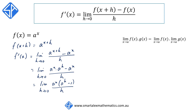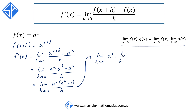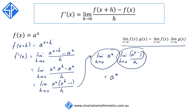We now apply the limit law, and we can rewrite this as the limit as h approaches 0 of a to the x, times the limit as h approaches 0 of (a to the h minus 1) all over h. The first term is simply a to the x, and we now need to evaluate the limit as h approaches 0 of (a to the h minus 1) over h.